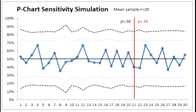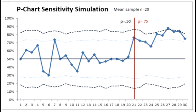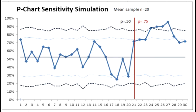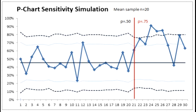Our team now needs to move from 50% to 75%. We're going to keep the same sample size and see how the p-chart does with a sample size of about 20, moving from 50% reliability to 75% reliability. And here we can see that we're not doing quite as well.